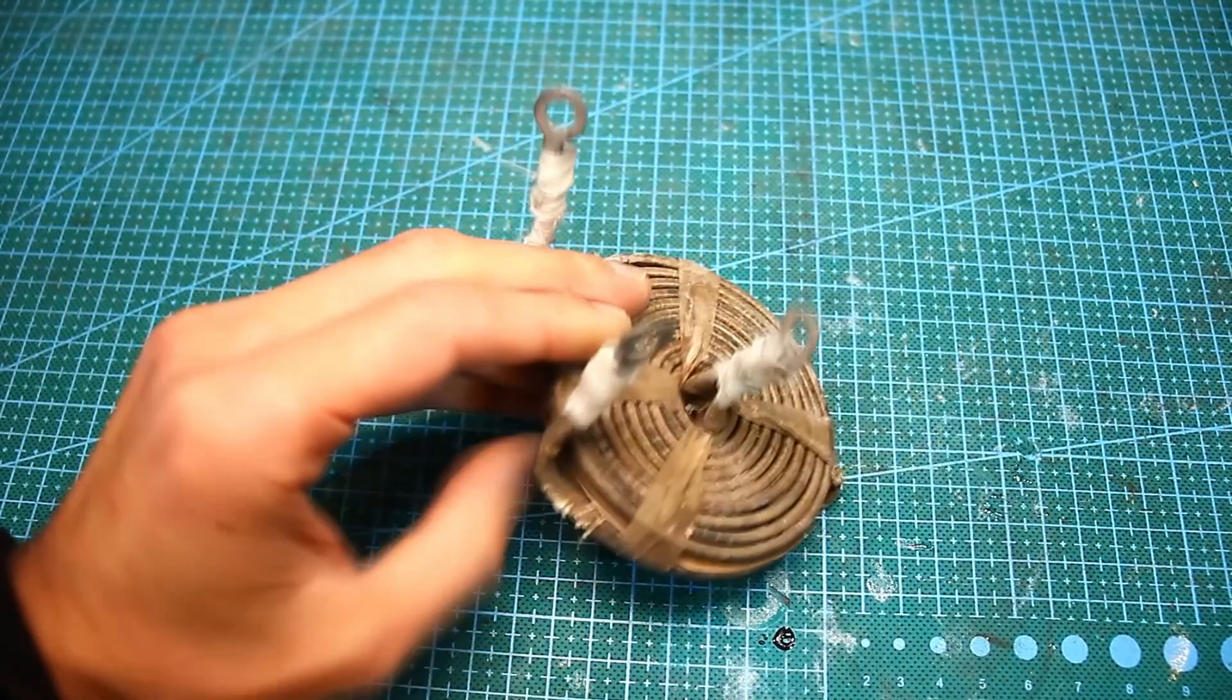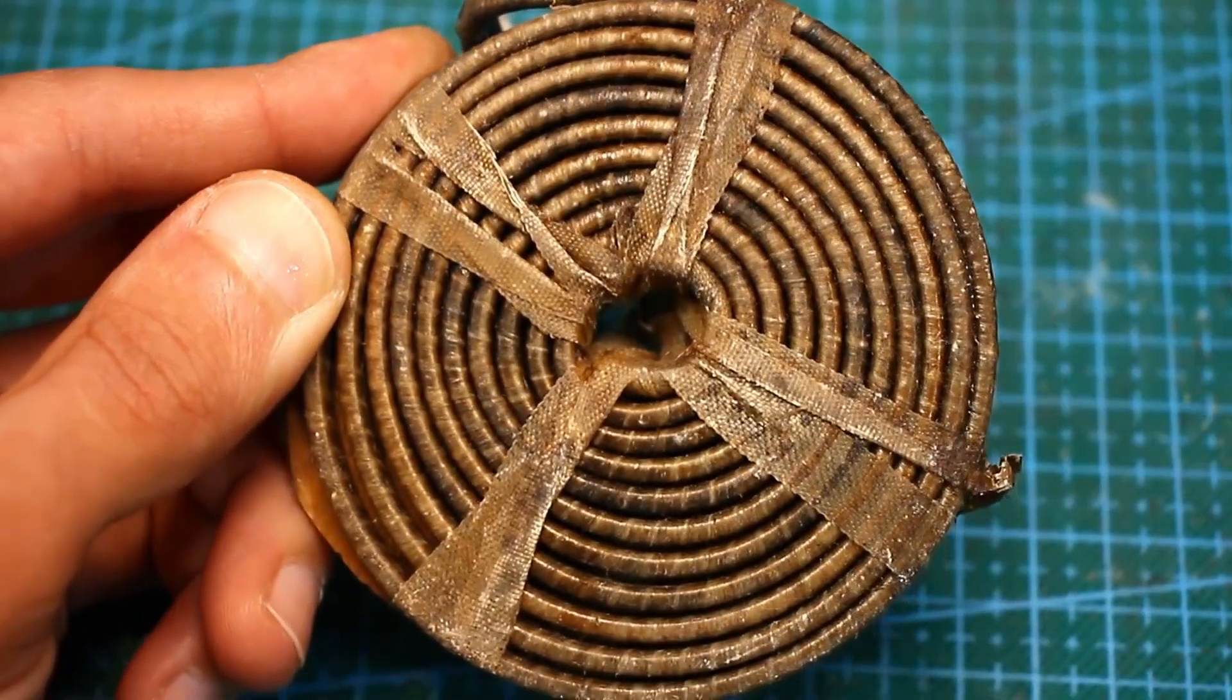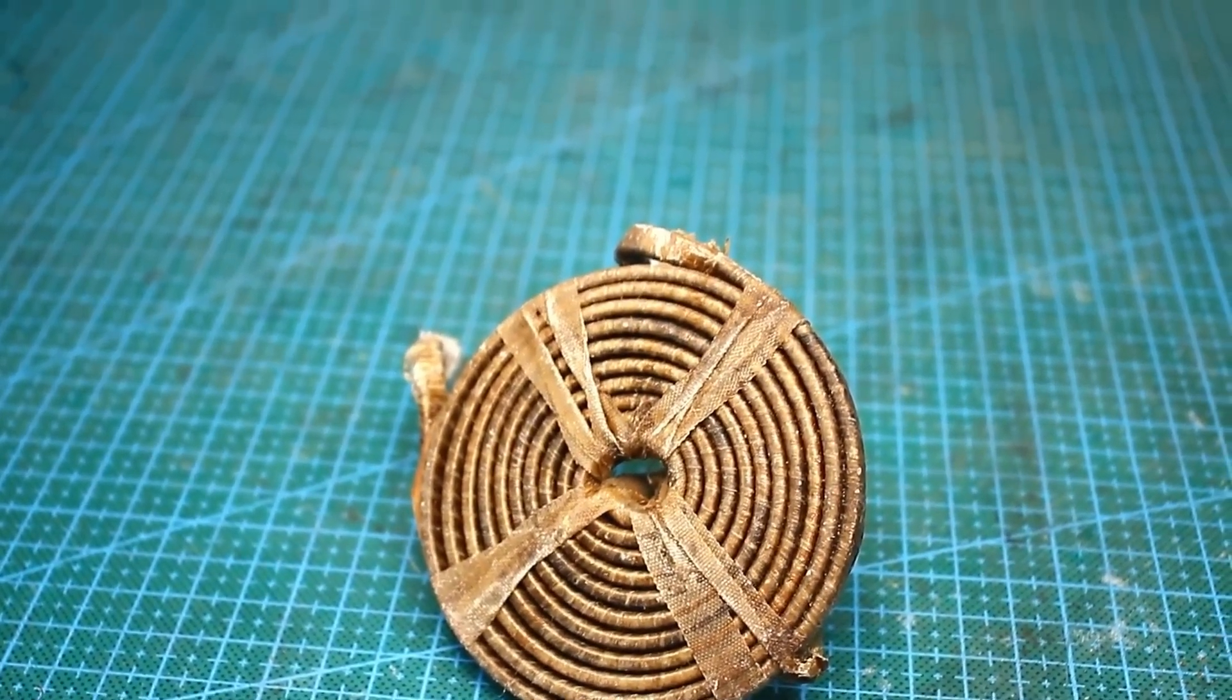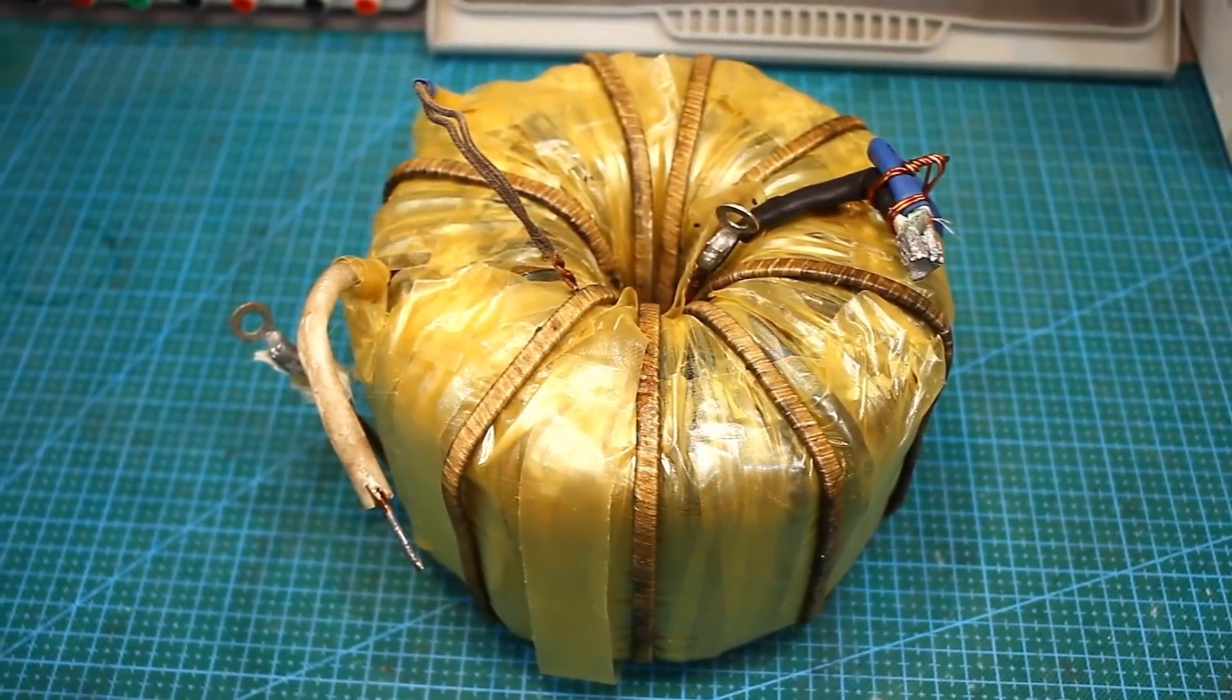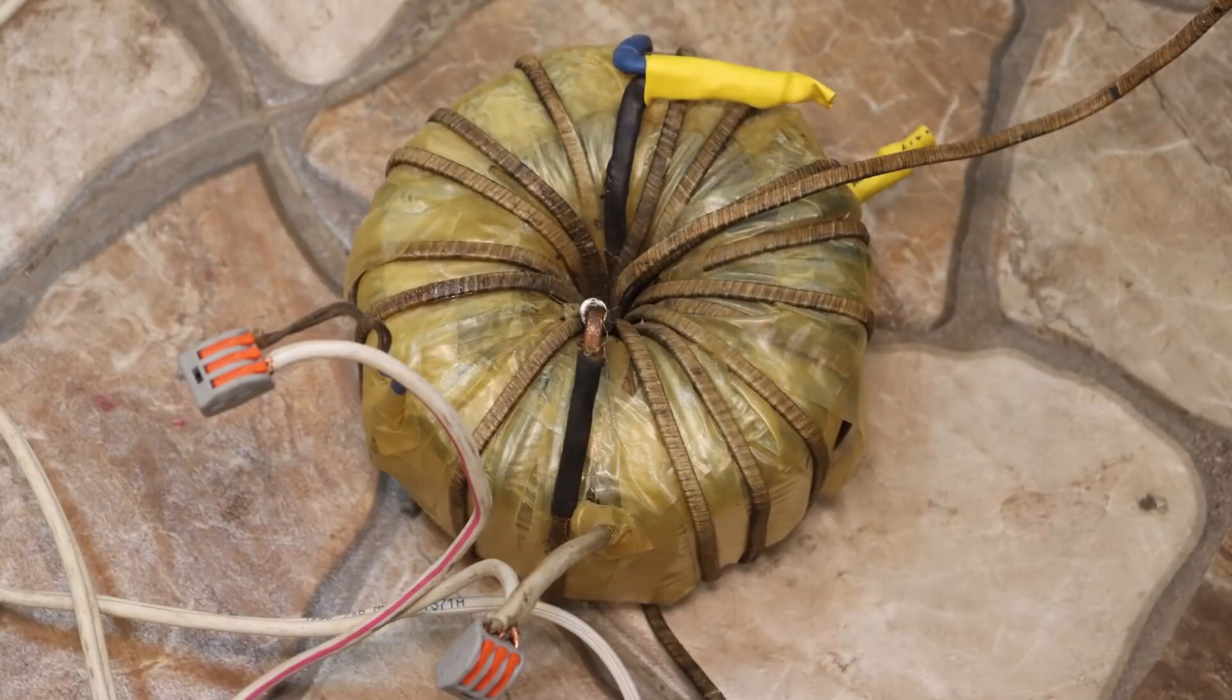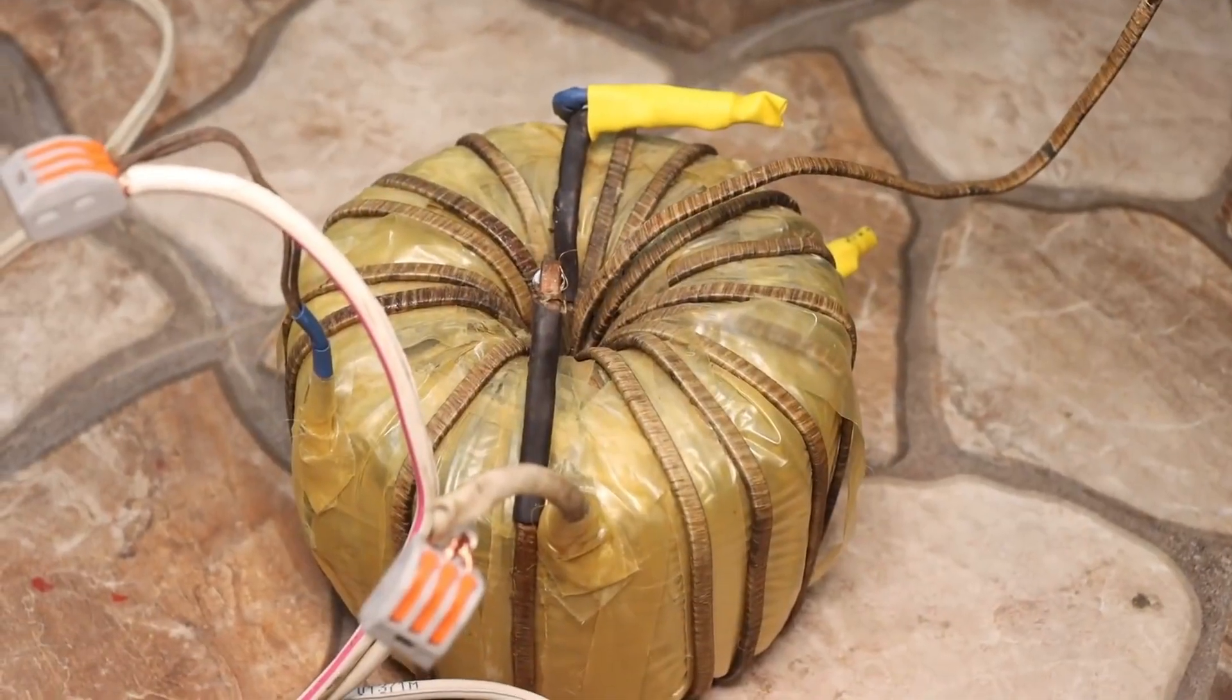I found coils wound with a 14 square millimeter copper busbar, which I had once bought at a flea market. Unfortunately, this busbar is not continuous, so the winding was done with pieces of the busbar. The joints were soldered using copper tin sleeves, and then insulated with several layers of heat shrink tubing.